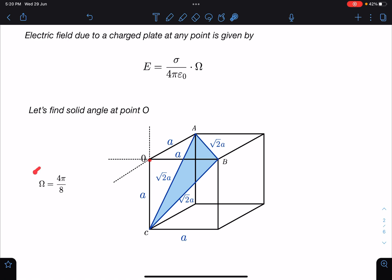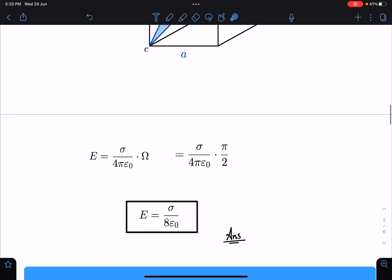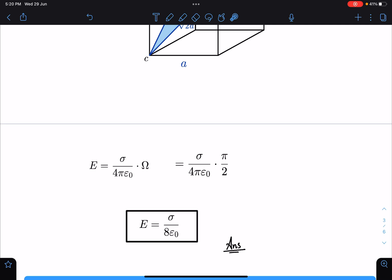So one-eighth of that will be the solid angle subtended by the plate at this particular point. This is going to be 4π/8, which is π/2.